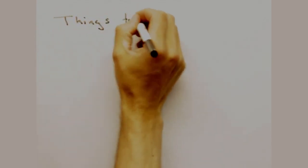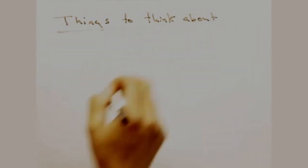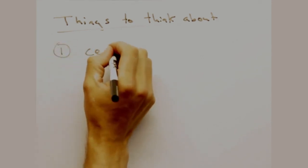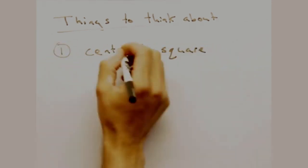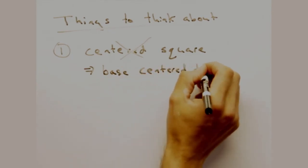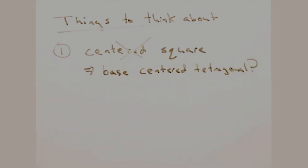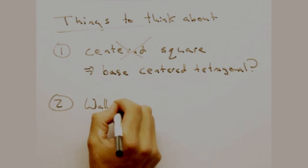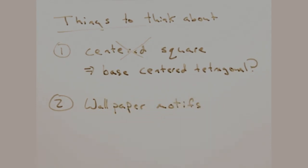In closing, here are a few things to think about on your own. Earlier I talked about how it doesn't make sense to talk about a centered square lattice. Why wouldn't it make sense to have a base-centered tetragonal cell? To give you some further practice, here's a set of wallpaper motifs. Can you find lattice points and vectors for each of these?